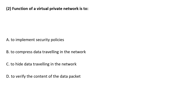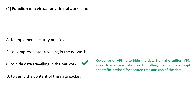Practice question: The function of a virtual private network is to hide the data from a sniffer. VPN uses data encapsulation or tunneling method to encrypt the data traffic for secure transmission. VPN does not provide other functionality as mentioned in options A, B, and D.